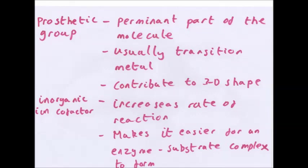Prosthetic groups. These are a permanent part of the molecule, usually a transition metal, zinc ion, and they contribute to the 3D structure. Hemoglobin. Now that's not an enzyme, it's still a protein. It has prosthetic groups. It has iron, which binds to oxygen. Without that iron, hemoglobin wouldn't work. And it also changes the 3D shape. Iron transition metal. It also has inorganic ion cofactors. This just increases the rate of reaction because since it's charged, it helps attract the substrate. So it makes it easier for enzyme substrate complexes to form.